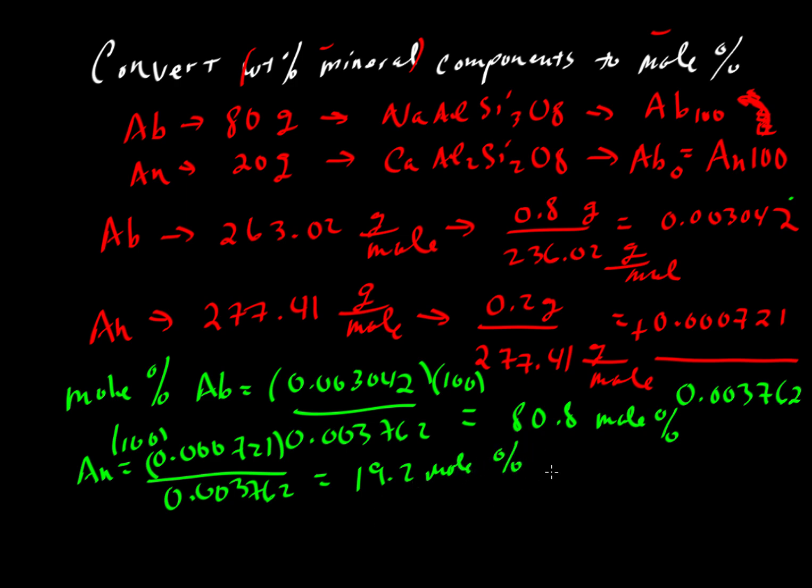And the way we would express this, as we did with this kind of notation, is that this particular mixture that we've created in our garage would be expressed as albite 80.8. And if there are only two components, then that would be equivalent to anorthite 19.2.